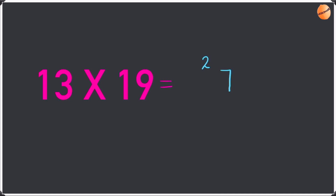Now multiply the first digit of both the numbers. So we are going to do 1 times 1, which is going to be just 1. Now write a dash in the middle.